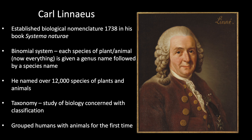Carl Linnaeus was the one who established biological nomenclature in his 1738 book Systema Naturae. This introduced the binomial system where each species of plant and animal was given a genus name followed by a species name. Linnaeus named over 12,000 species of plants and animals. Some have been changed with modern approaches, but many remain, and this classification system is largely referred to as taxonomy — the study of biology concerned with classification.